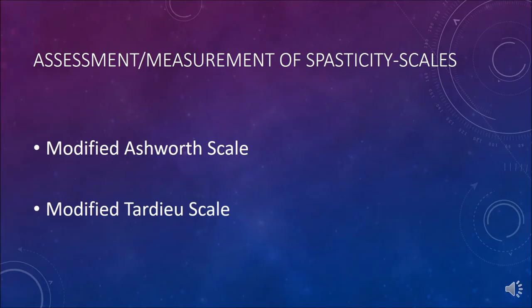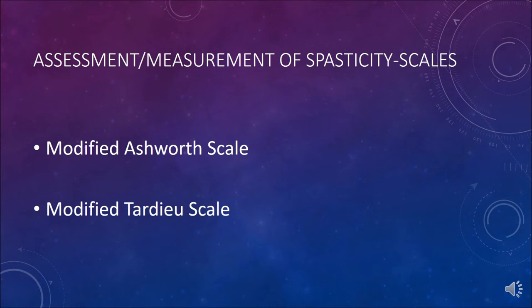There are two common tools for spasticity assessment: the Modified Ashworth Scale and the Modified Tardieu Scale. Some consider the Modified Ashworth subjective, and some describe it as an assessment of tone, but recent literature uses both tools for initial assessment and follow-up after treatment.